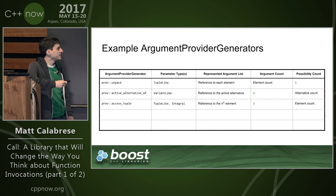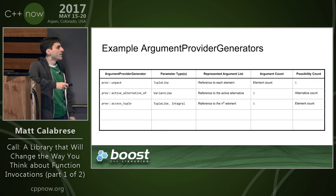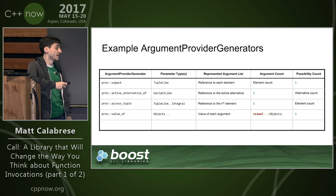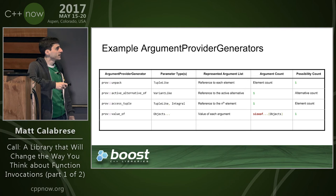prov::access_tuple takes a tuple-like and an integral, represents a reference to the nth element, has argument count of one, and possibility count equal to the number of elements in the tuple. prov::value_of is a less interesting one — it's a way of binding objects into a single object representing a complete argument list. It can take any number of objects, contains them by value, represents an argument list of size n, and is a sum type of size one. prov::reference_to is the corresponding version that contains references and perfect-forwards them.